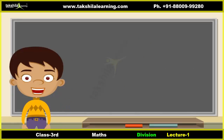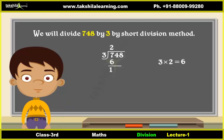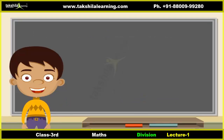Now we will divide seven hundred forty-eight by three using the short division method. Divide the first number in the dividend: three twos are six, and seven minus six is one. Write two above and carry one near four to make it fourteen. Then divide three into fourteen: three fours are twelve, fourteen minus twelve is two. Write four above and carry two in front of eight to make it twenty-eight. Then divide three into twenty-eight: three nines are twenty-seven, twenty-eight minus twenty-seven is one. Put one as the remainder.